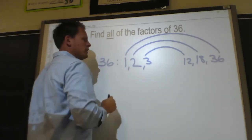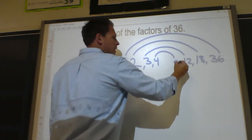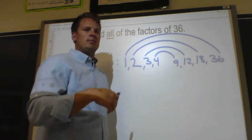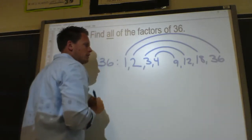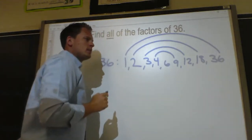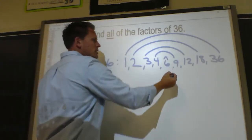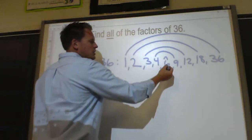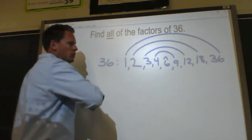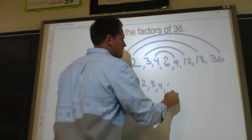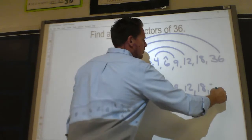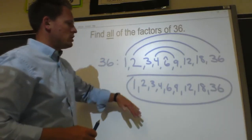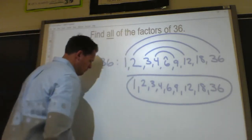After 3, check 4 — 4 times 9 equals 36. After 4, check 5 — 5 times 6 is 30, 5 times 7 is 35, 5 times 8 is 40, so it jumps right over 36. After 5, check 6 — does 6 work? Yes. 6 times 6 equals 36. You don't write 6 twice — 6 is just one factor of 36. After 6, the next would be 7, but we've already eliminated it and we're starting to repeat ourselves. Factors of 36 are 1, 2, 3, 4, 6, 9, 12, 18, 36.